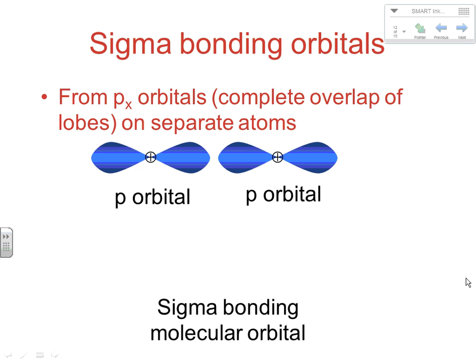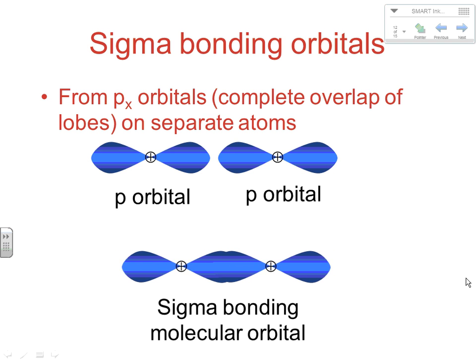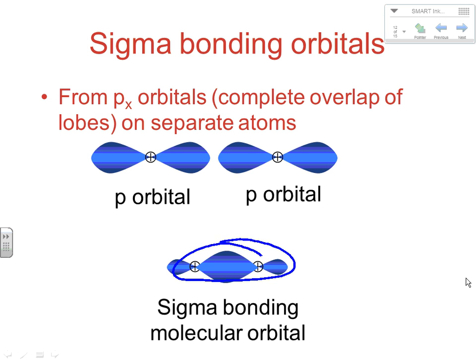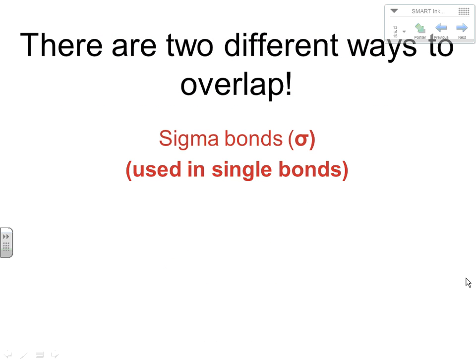When we have an overlap of p orbitals coming together end-to-end, essentially the same thing happens: electrons shift from where they used to be in the atoms to a new region of space between the nuclei. This is also a sigma type of bonding because of where the electrons predominantly are. S-and-p overlaps work the same way. Sigma bonding is when we have an overlap of s-s or s-p orbitals and the electrons end up existing in the internuclear axis area.